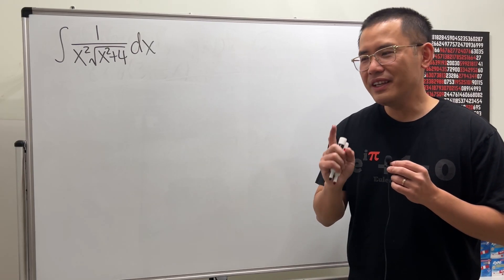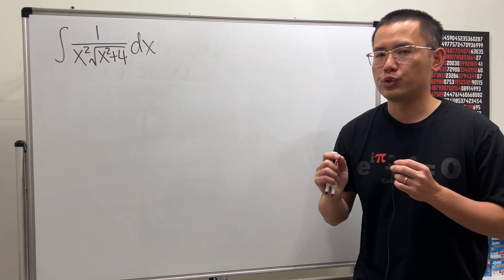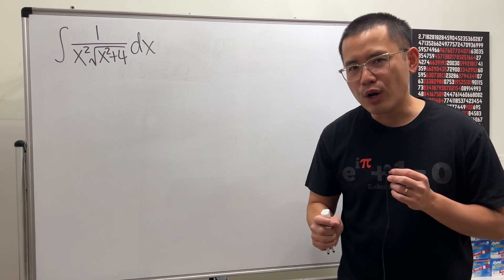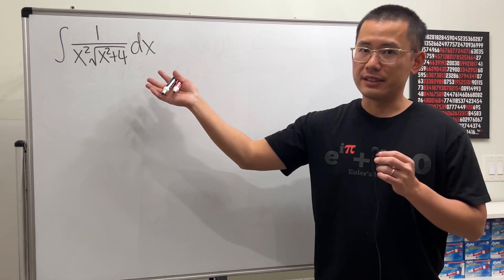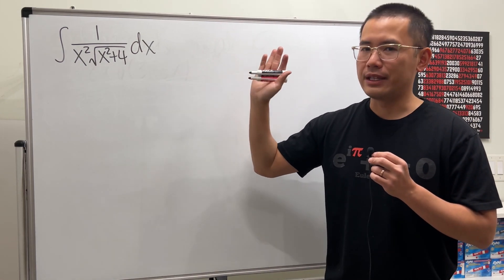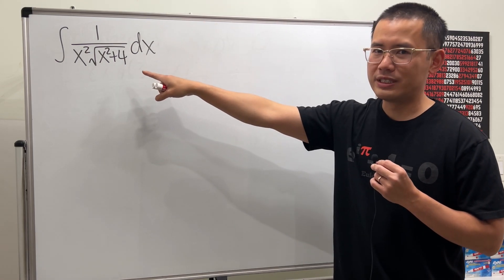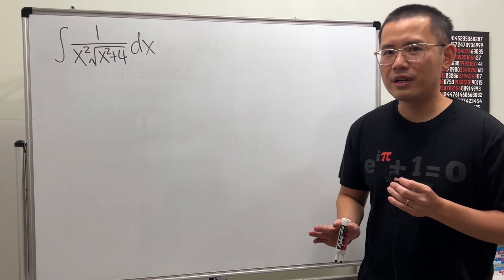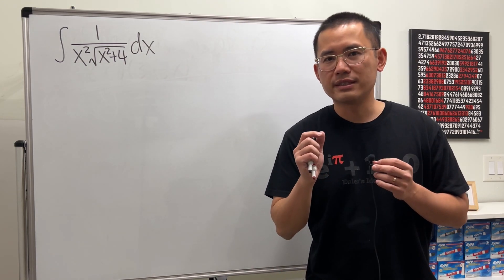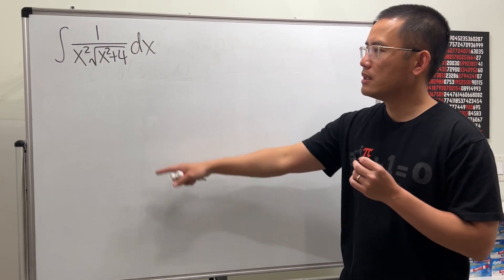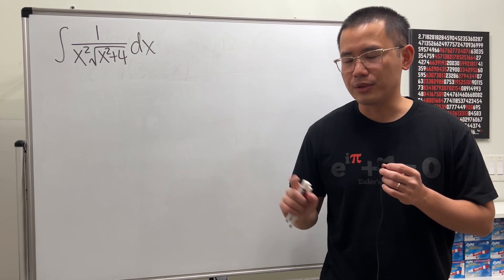If you're taking Calculus 2 right now, you need to know how to solve this kind of integral, especially by doing trig substitution. I know when you see this kind of integral for the first time they are scary and difficult — I totally understand, I had a hard time with them as a student too. My goal here is to help you understand how to solve this one, and I'll also give you a bonus because this one can actually be done with just u-substitution.